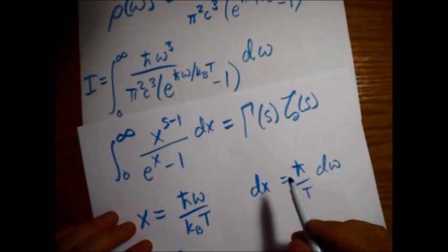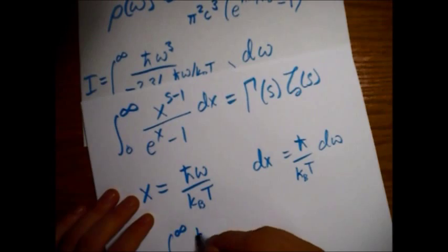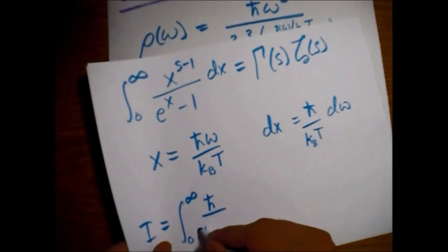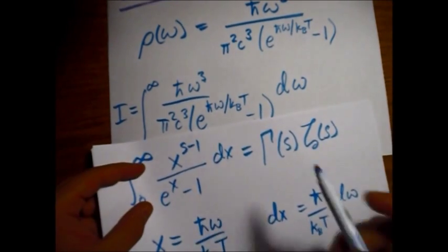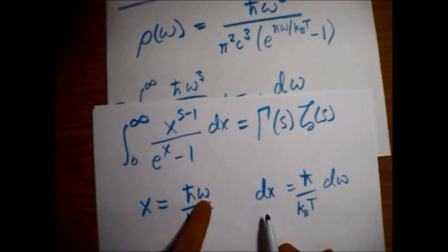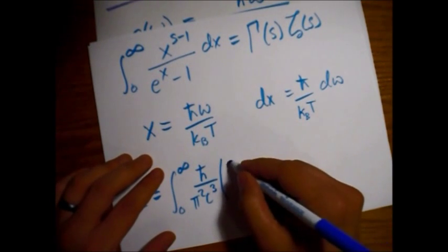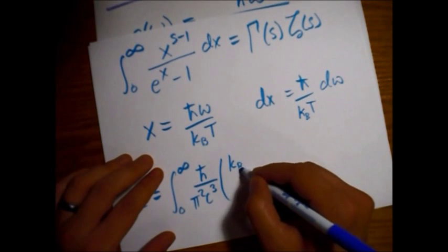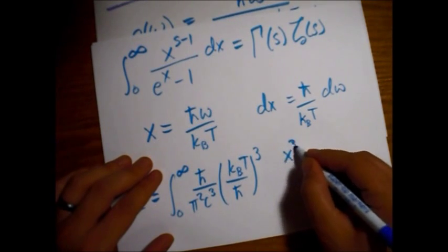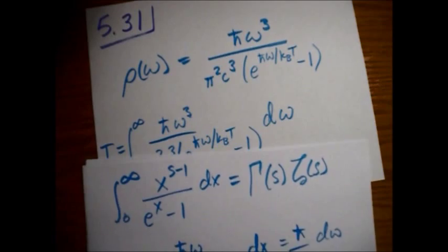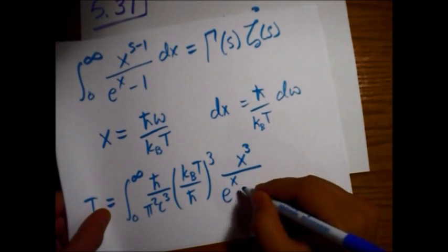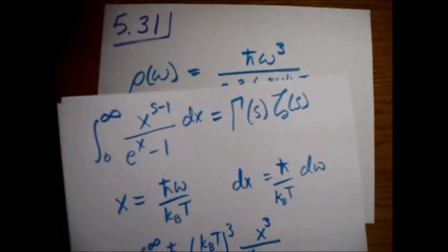All right, so let's write the constants out in front first. So we have this h bar, and then we have the pi squared c cubed. Now let's put in the constants for omega cubed. So we have a kBT over h bar, like this, and it's cubed. And then we have an x cubed on top. And we still have this term to deal with, which was an e to the x minus 1. So you can see our integral taking shape here.